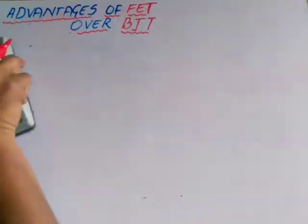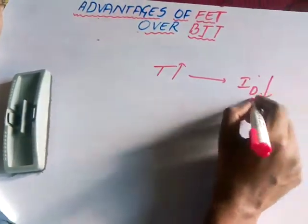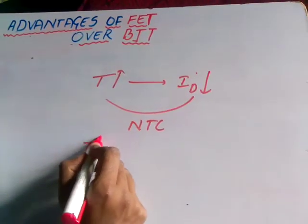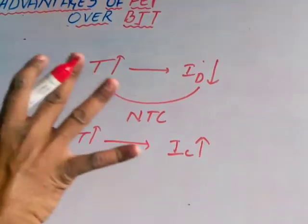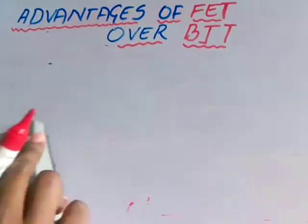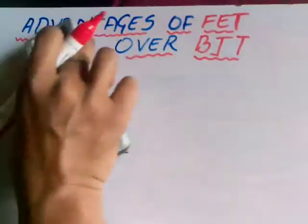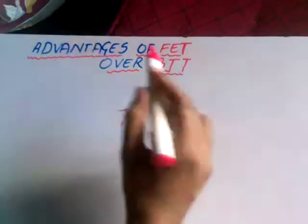In order to overcome thermal runaway, we use FETs. There is no such problem in field effect transistors because in FETs, as temperature increases, its drain current decreases — that is, it is having a negative temperature coefficient. Whereas in BJT, as temperature increases, IC increases — it is having a positive temperature coefficient. That is why field effect transistors are more advantageous when compared to BJT. In very high standard colleges and universities, the entire syllabus is now covered with MOSFETs, because they are more advantageous compared to BJTs.